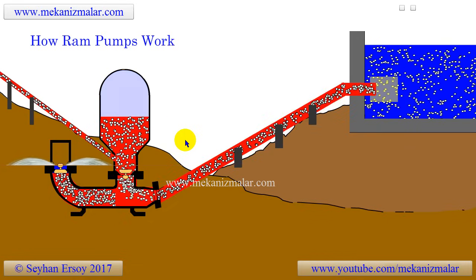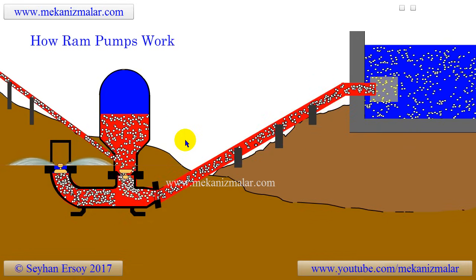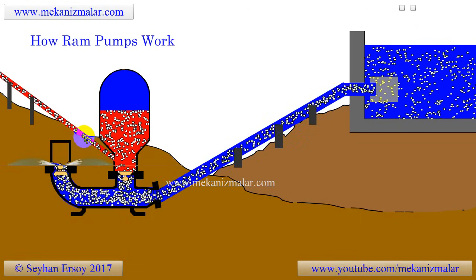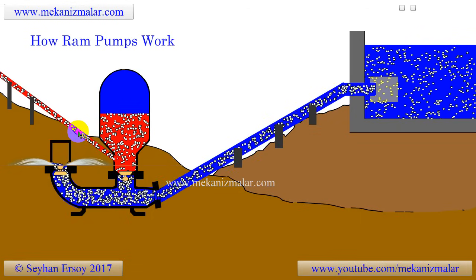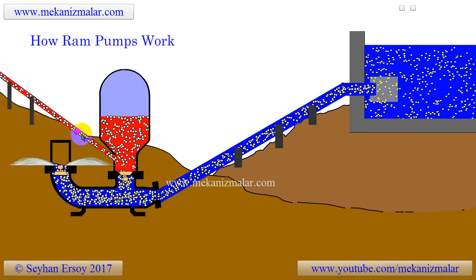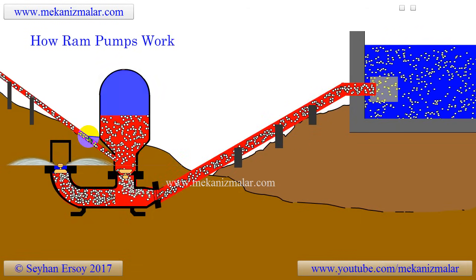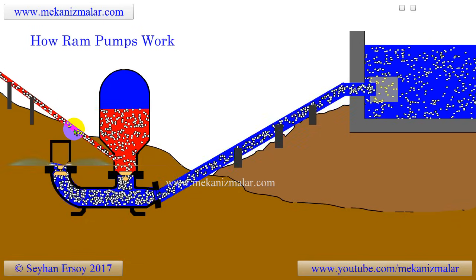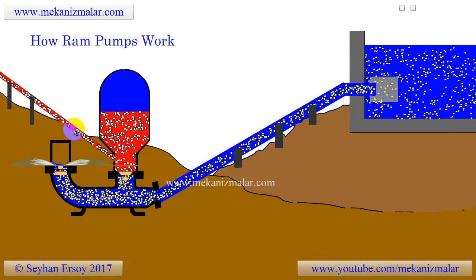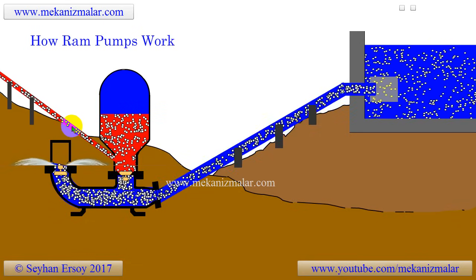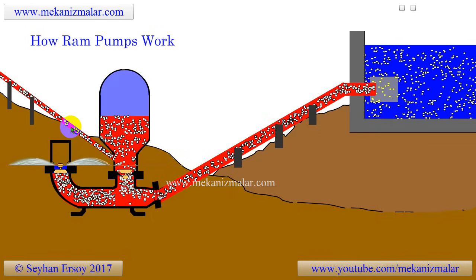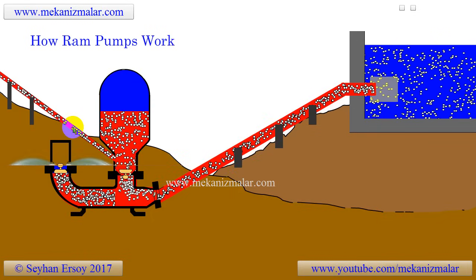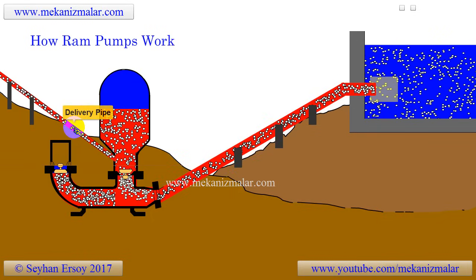However, the water continues to flow through the delivery pipe, and this is due to the pressure of trapped air inside the accumulator. The accumulator acts just like a flywheel, regulating the water flow rate through the delivery pipe and absorbing pressure spikes from the system.